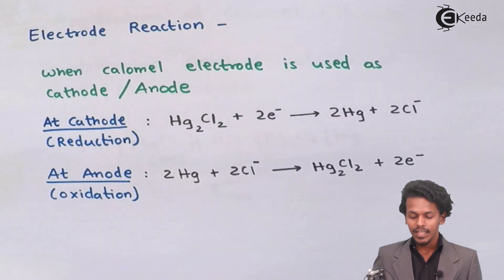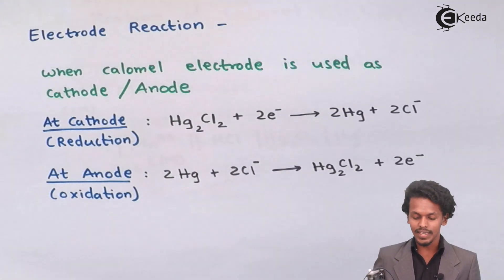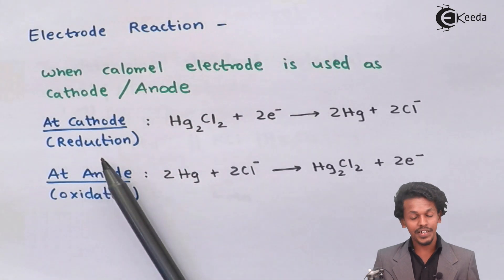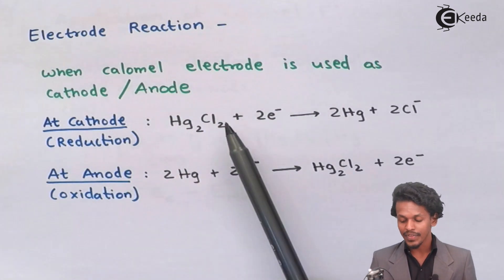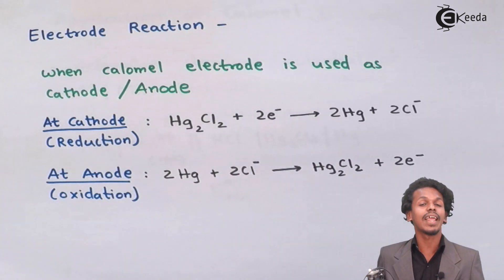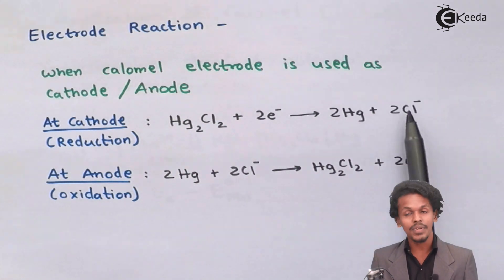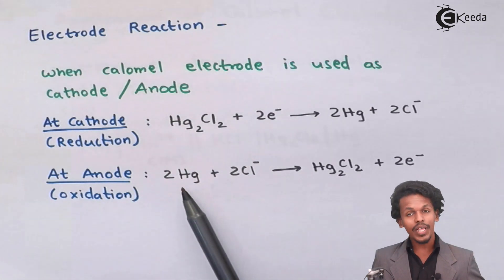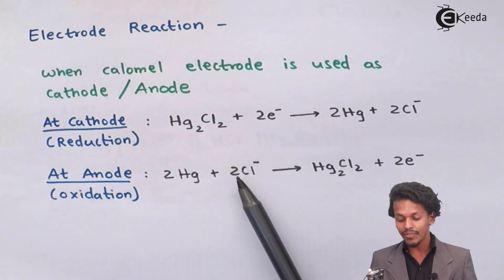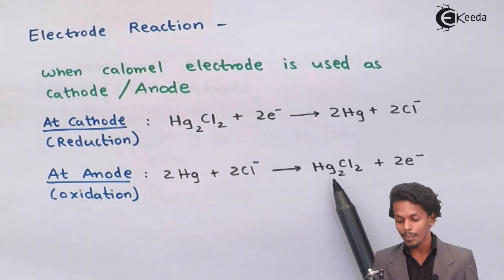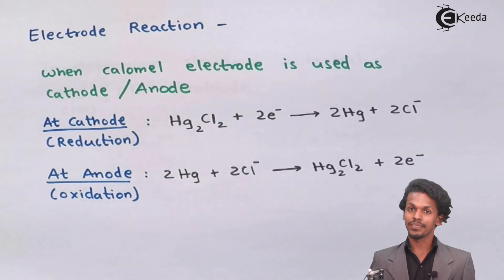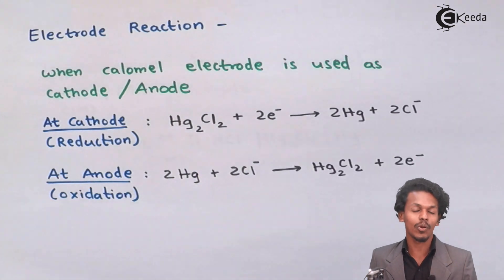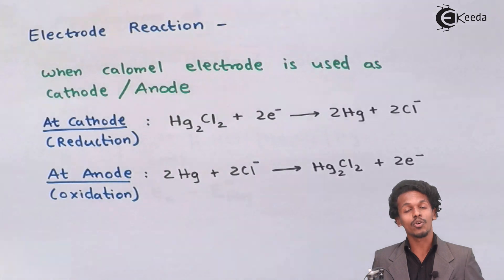When the calomel electrode is used as a cathode, it undergoes a reduction process: Hg₂Cl₂ + 2e⁻ → 2Hg + 2Cl⁻. When used as an anode, it undergoes oxidation: 2Hg + 2Cl⁻ → Hg₂Cl₂ + 2e⁻, where the mercury from the lower layer reacts with Cl⁻ ions. Through this reaction, the overall potential changes and we can calculate the cell potential as well as the electrode potential of the other electrode connected.